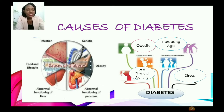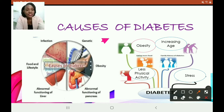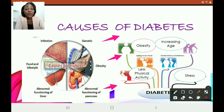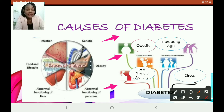Based on the image you're seeing here, you can see genetics, obesity, abnormal functioning of the pancreas — which means there isn't any insulin being produced. You may also have abnormal functioning of the liver. Food and lifestyle are very important — if you're consuming too much sugary foods and put your body under pressure to produce insulin to break down the sugar in your blood, then you can become diabetic. Also, certain infections can cause a person to become diabetic, increasing age, stress, and also less physical activity.